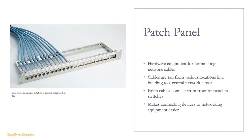Patch panels are hardware equipment for terminating network cabling. Cables are run throughout a building from multiple rooms and locations to a central location such as a network closet or data center. These cables are terminated on the back of the patch panel, and patch cables are then run from the front of the patch panel to the switches. This makes connecting to network equipment easier and more manageable.